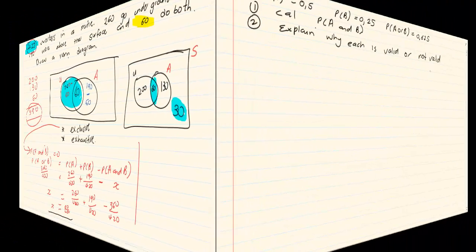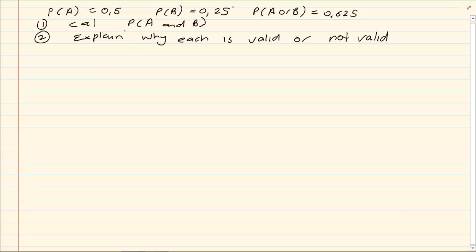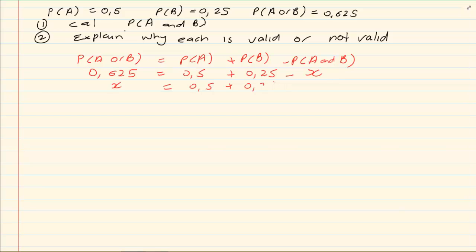Let's do another one. They are telling us that P of A is equal to 0.5, P of B is equal to 0.25, and P of A or B is equal to 0.625. If I want P of A and B, I know the formula says P of A or B is equal to P of A plus P of B minus P of A and B. So I have 0.5 plus 0.25 minus my unknown is equal to 0.625. My x is going to equal 0.5 plus 0.25 minus 0.625, which means my x is equal to 0.125.